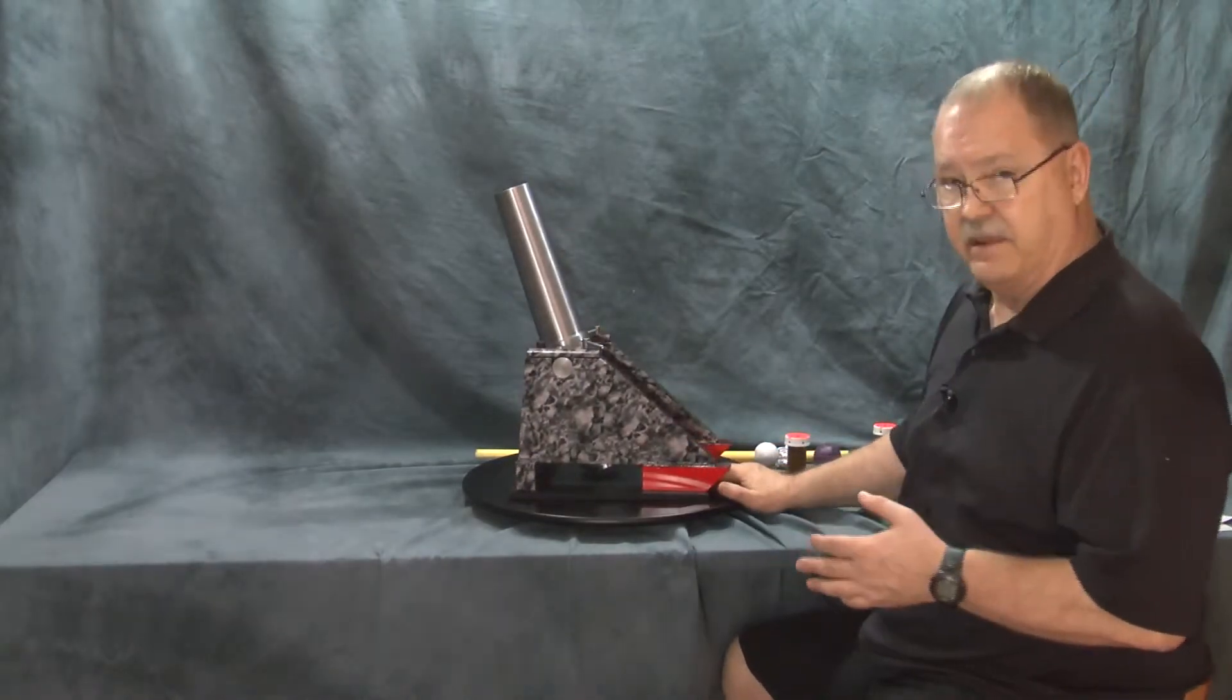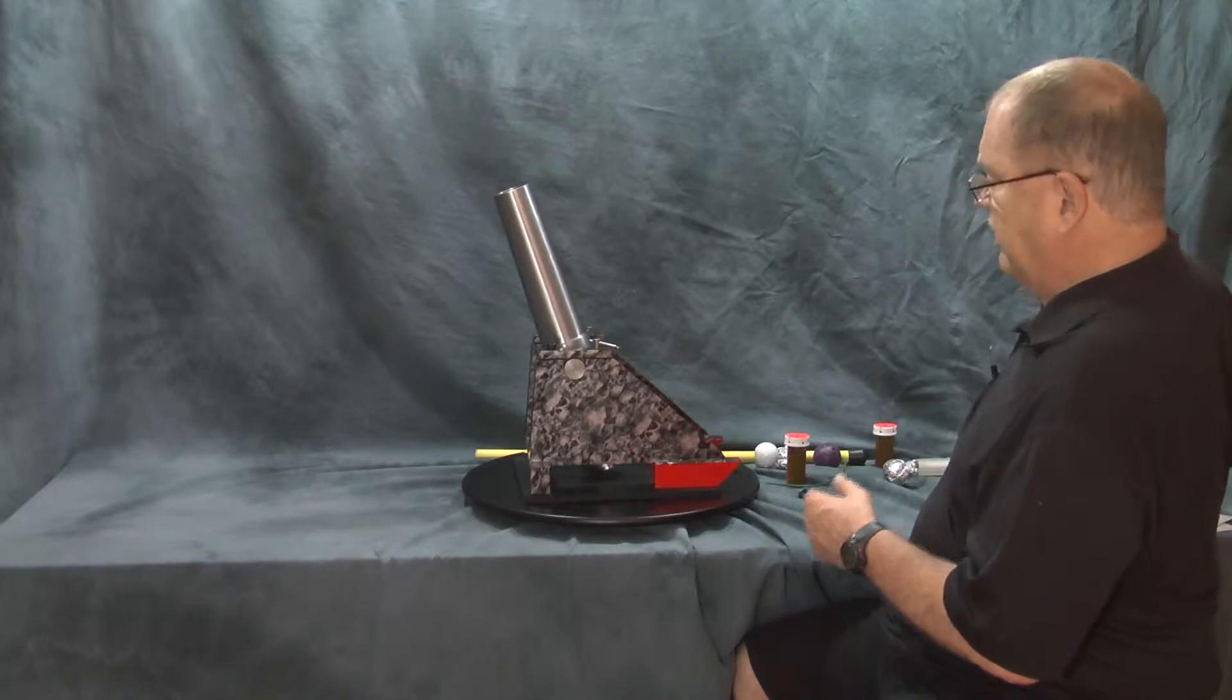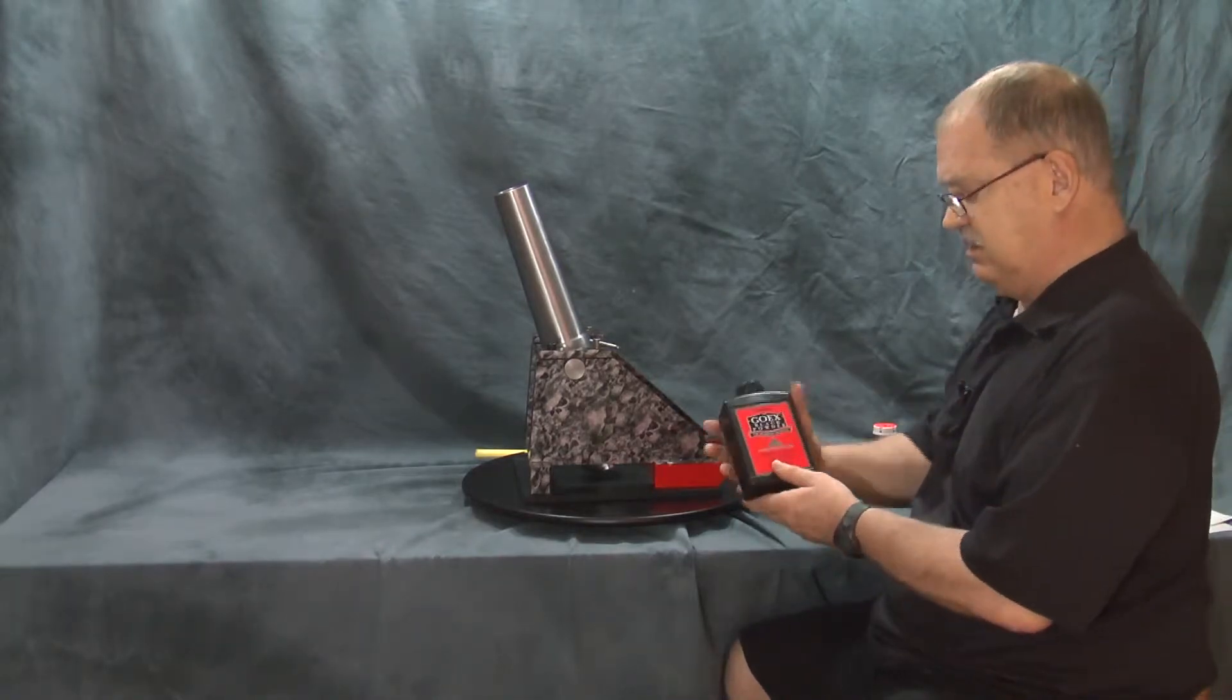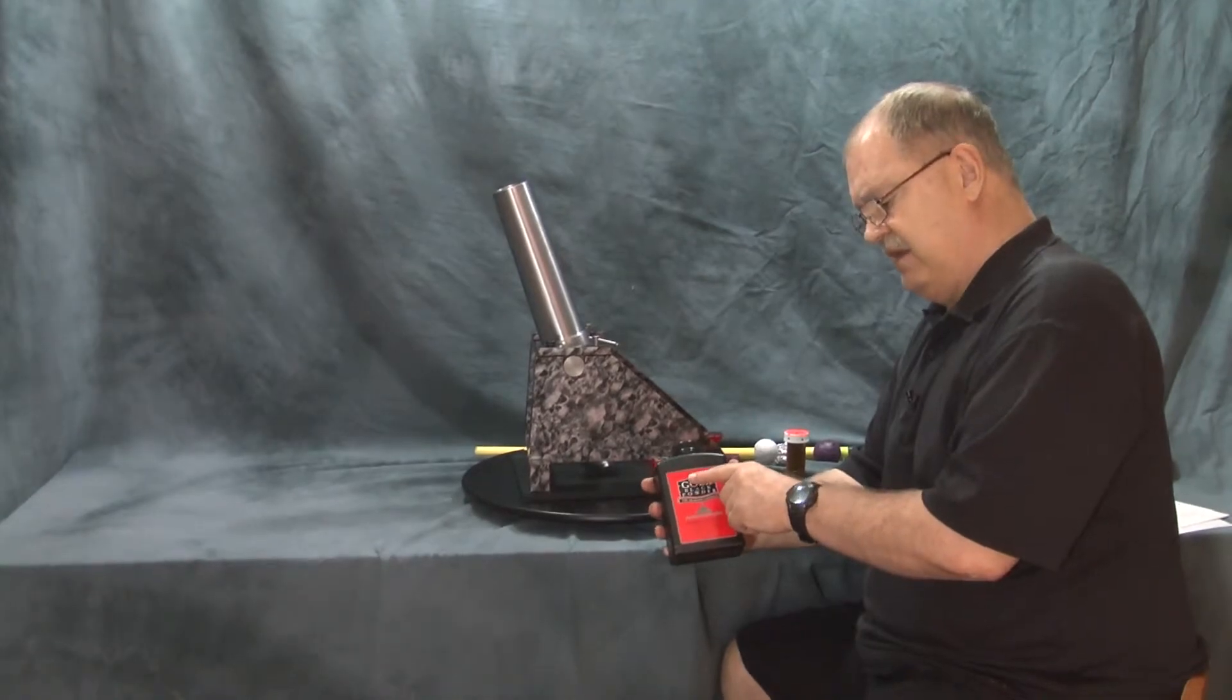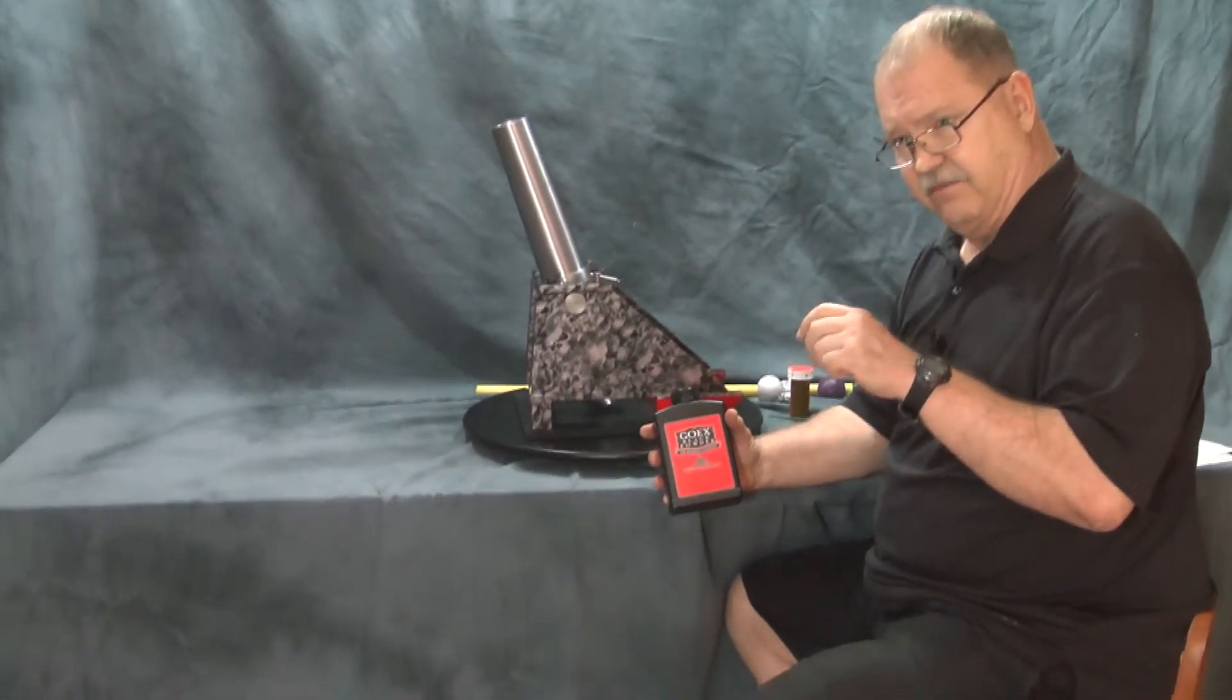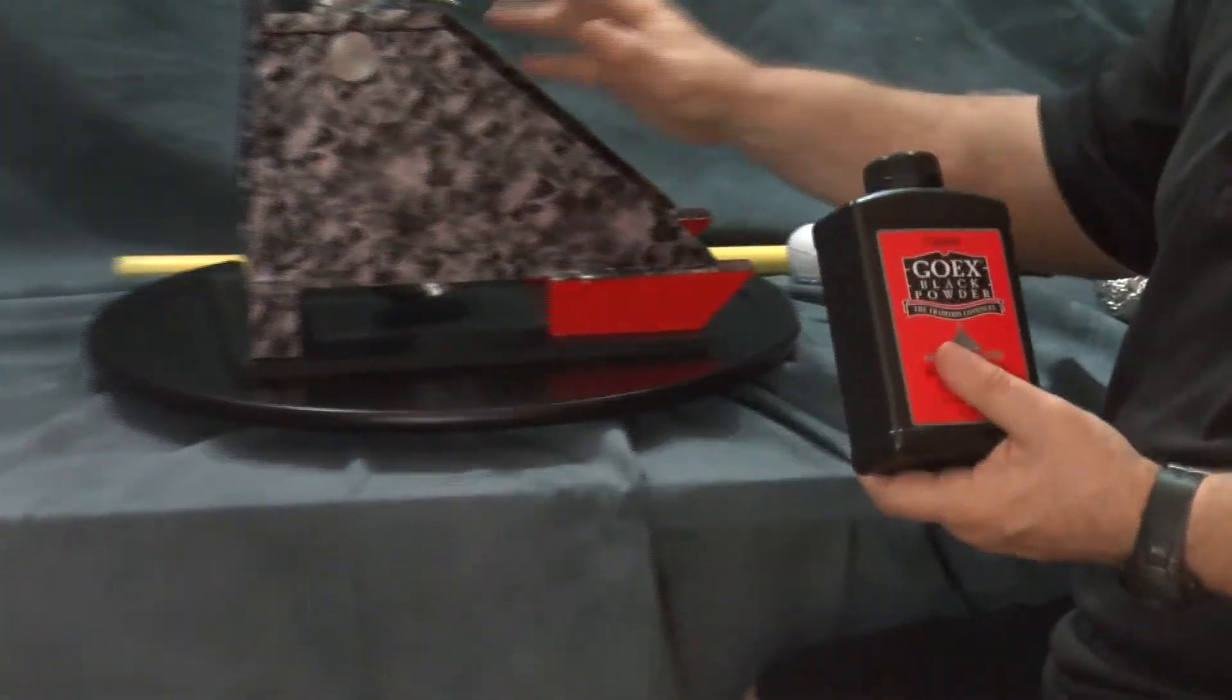Again, these are called black powder cannons. There's several different sizes. We generally recognize what is called cannon grain black powder. And cannon grain is a very coarse grain powder that burns a little slower that works very well in cannons.